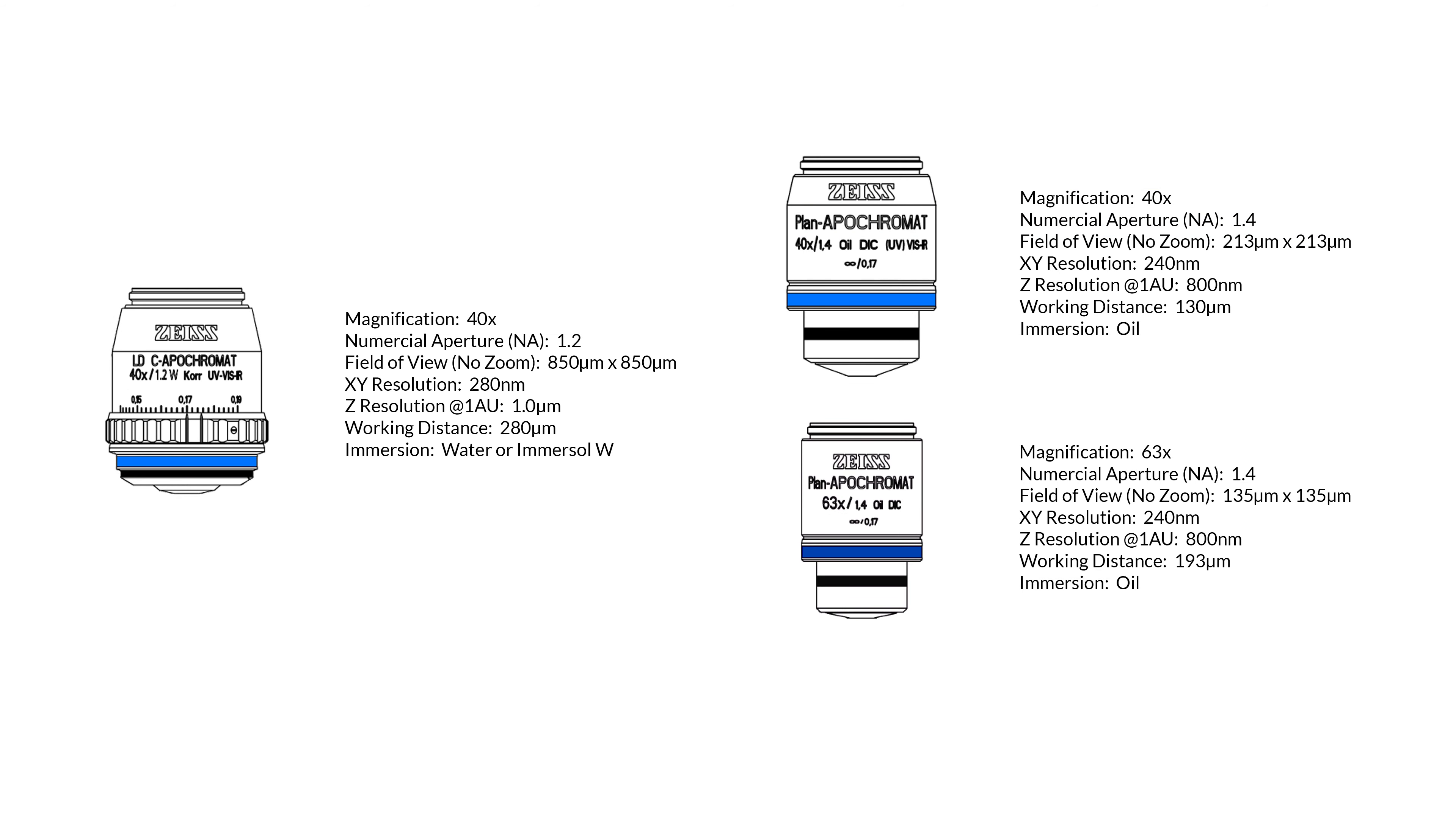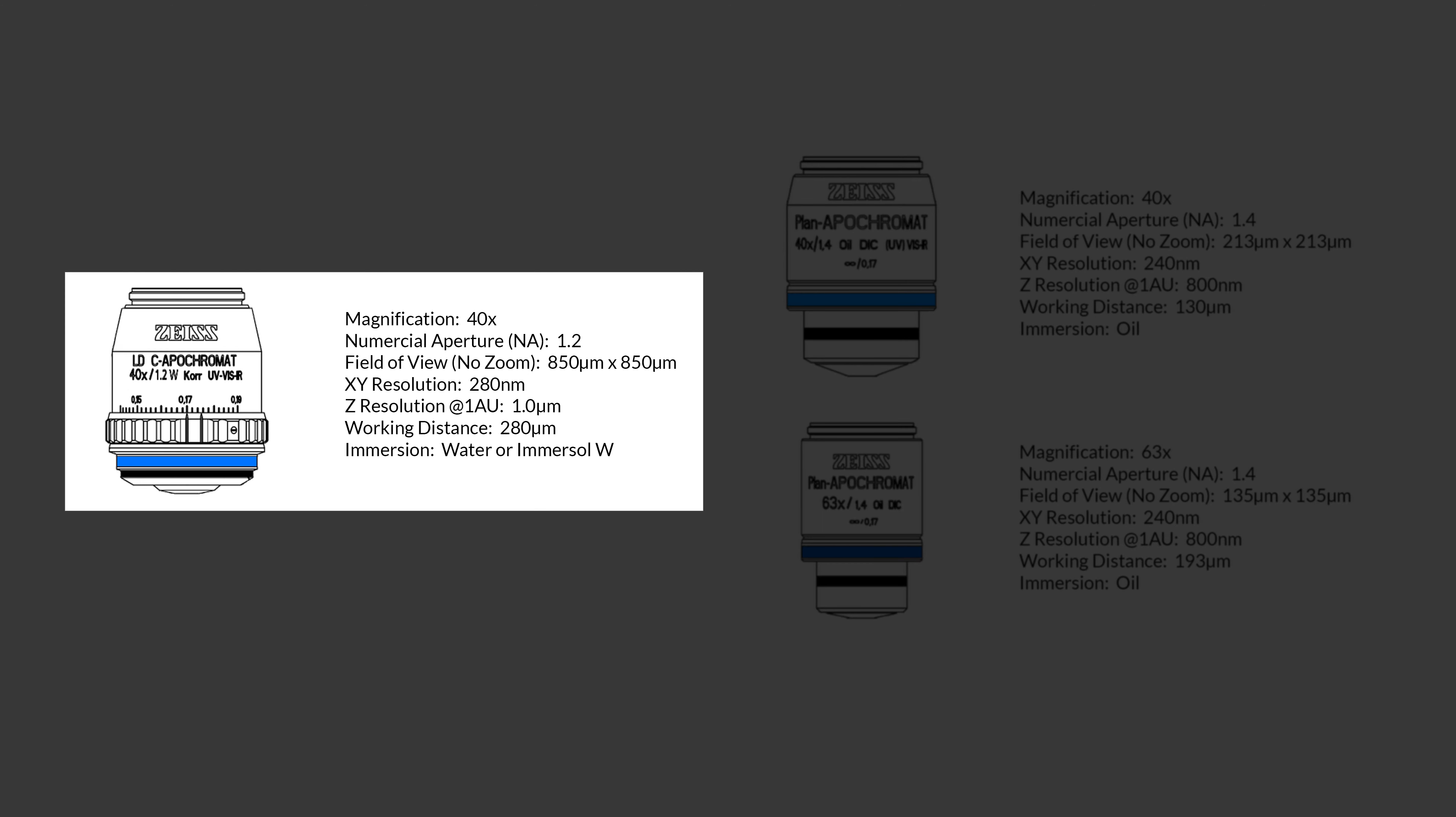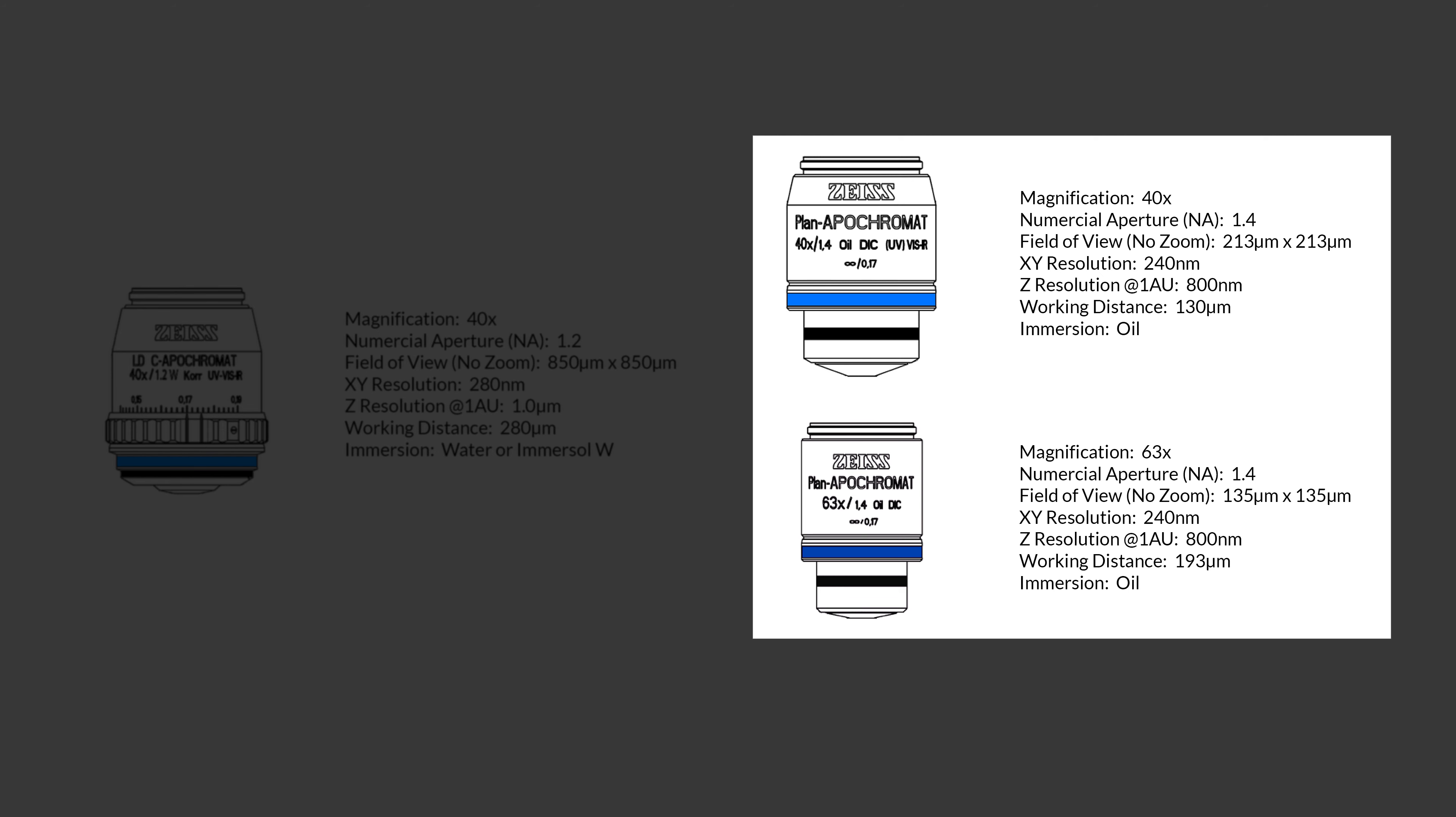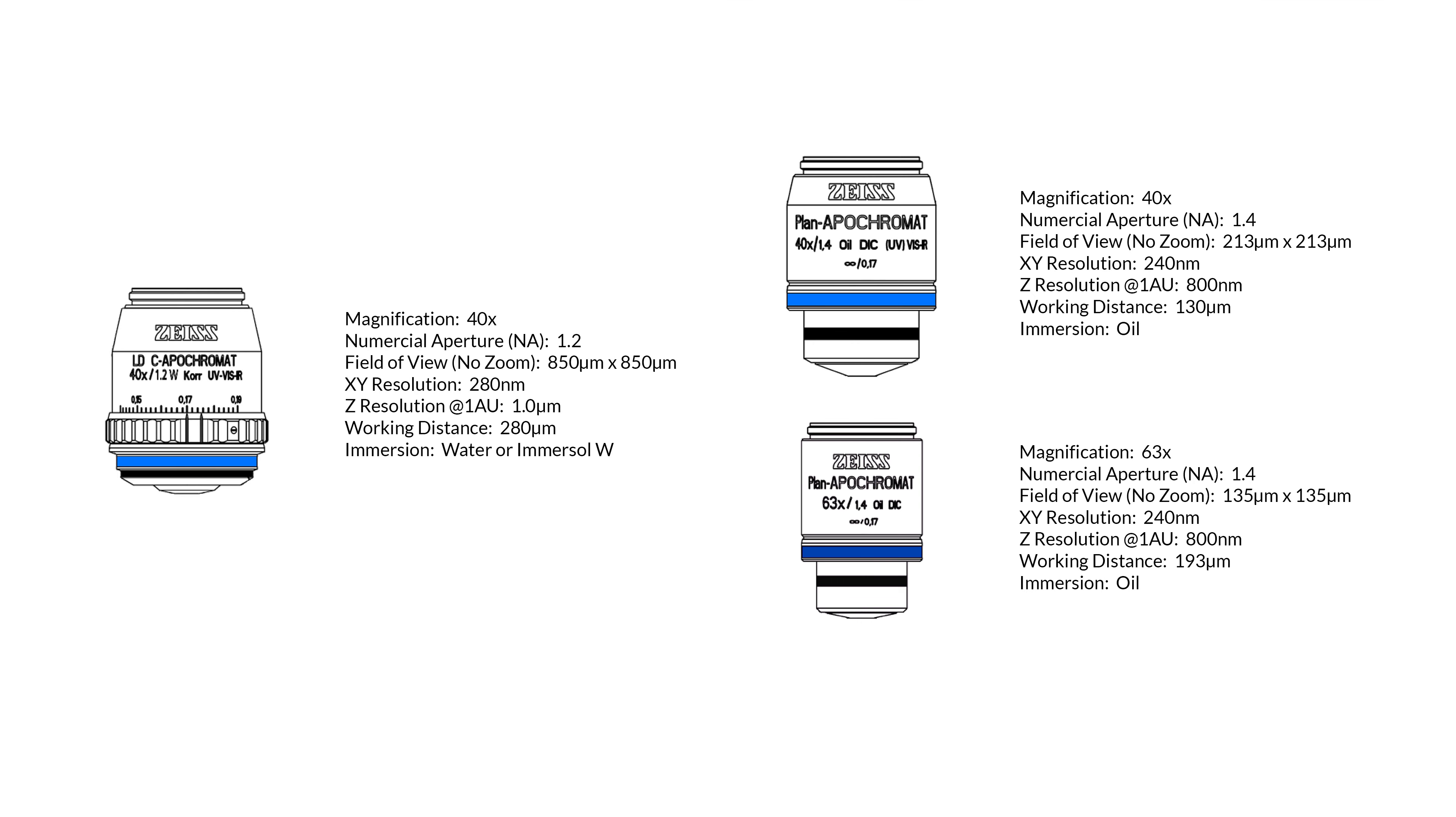The OIVM core's microscopes are typically outfitted with three immersion objectives. The first is a C-Apachromat 40x 1.2 NA objective designed to image with water immersion. Our microscopes are also equipped with 40 and 63x plan apachromat objectives, both with a 1.4 numerical aperture. These two objectives use oil for their immersion fluid.